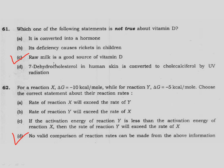Option C — raw milk is a good source of vitamin D — this is wrong. For reaction X, delta G is minus 10 kilocalorie per mole, while for reaction Y delta G is minus 5 kilocalorie per mole. Choose the correct statement about the reaction rate.